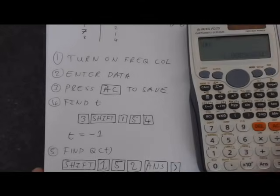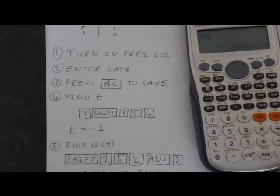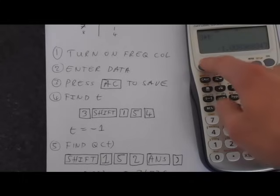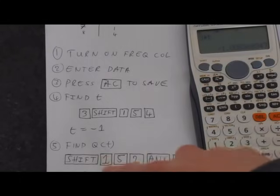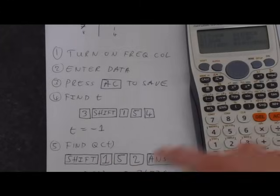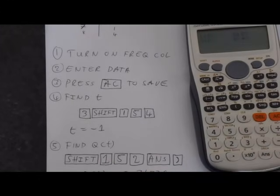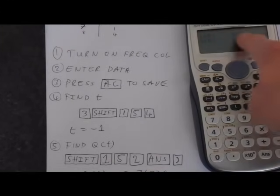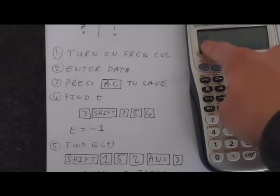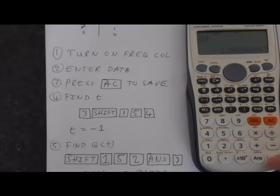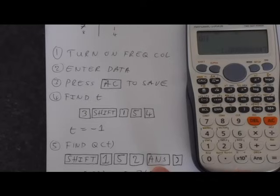Now we want to find Q of T. That's how you do it. Shouldn't come as any surprise when you see it done. Shift 1 back into stats mode. We want distribution. So we're pressing 5. Q of T is option 2. That gets us the Q function here.